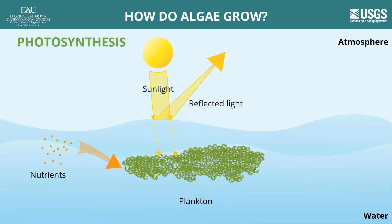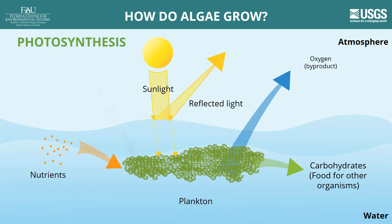Algae absorbs sunlight using chlorophyll A and other pigments stored within the algae. Through photosynthesis, algae creates sugars called carbohydrates from the dissolved carbon dioxide in the water, giving algae the energy it needs to live and grow.